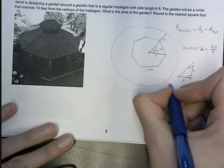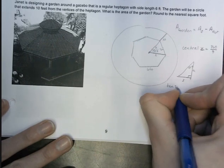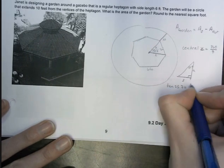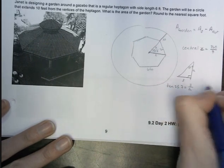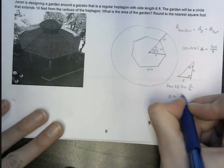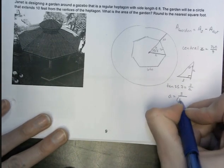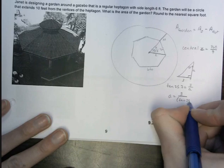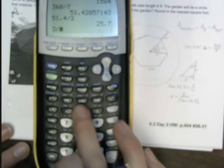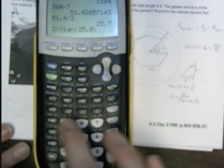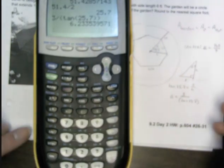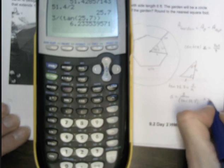So let's use some trig. So I've got tangent of 25.7 equals the opposite side over the adjacent. So when we end up solving for a, we get 3 divided by the tan of 25.7. Put that in here, 3 divided by tan, 25.7. And we get 6.2 for the apothem.